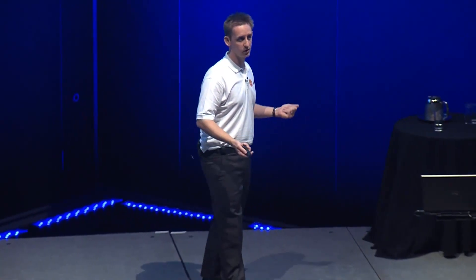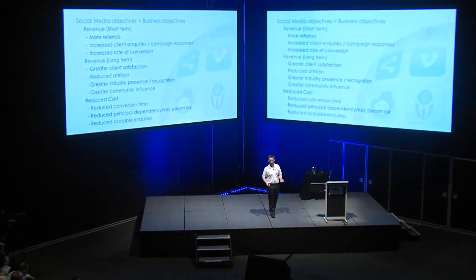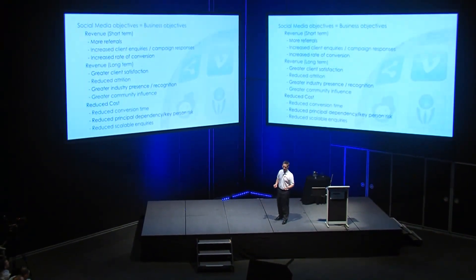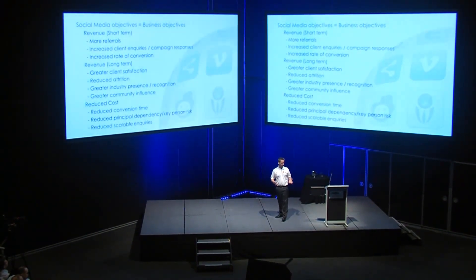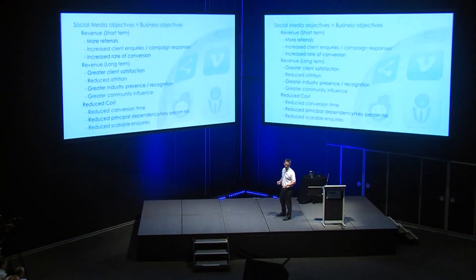Social media objectives — what am I trying to achieve with it? Well, they're no different; they're exactly the same as anything else. You're trying to make money and also trying to execute that 'why' stuff. There's a profit component in here — we know we need that, otherwise we're not in business. I break that up into three different categories: revenue short-term, revenue long-term, and then reducing cost — so that makes money.